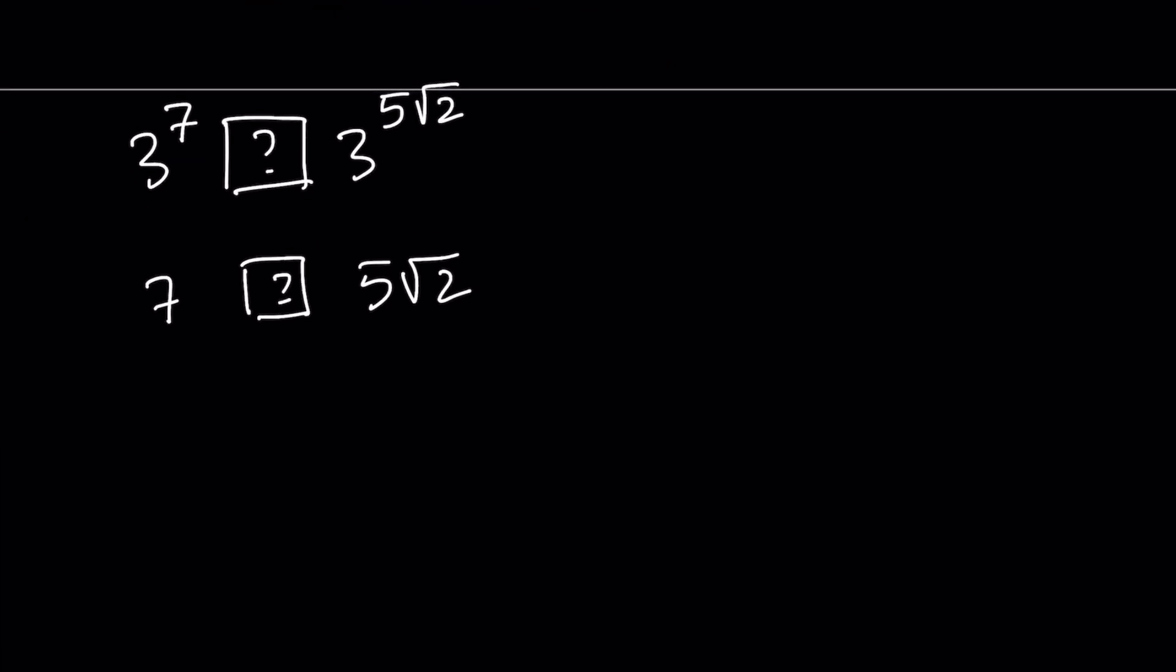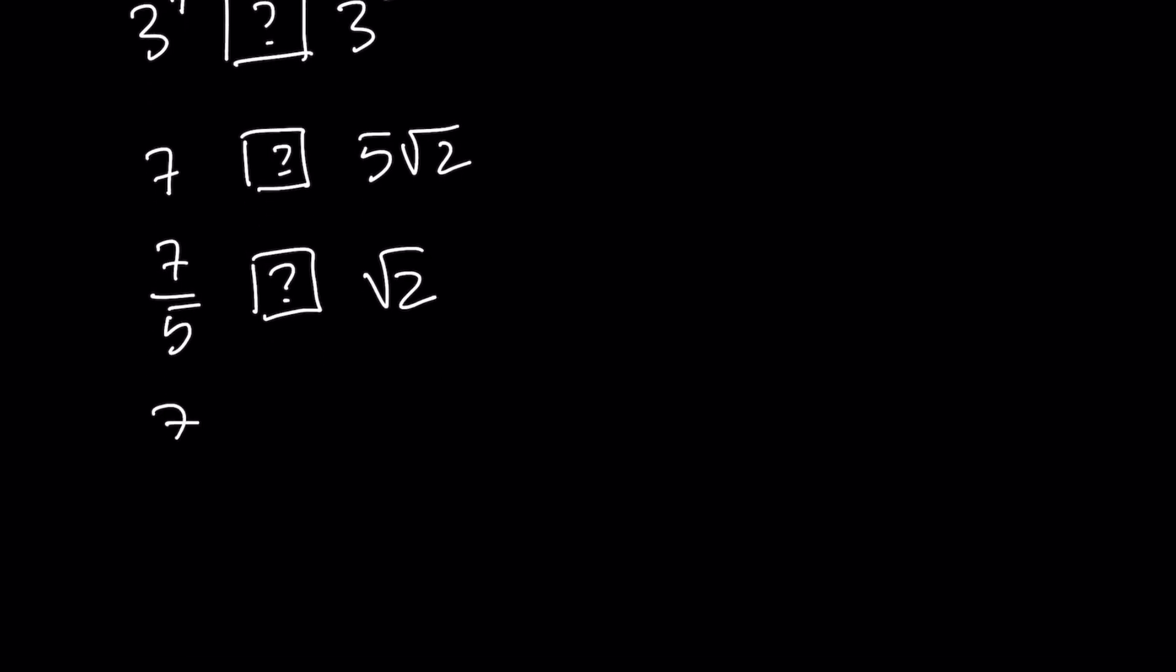How about we divide both sides by 5? That way, instead of comparing these two, why don't we compare 7 fifths and root 2? And I think that's an easy comparison. If you think about 7 over 5, that is equal to 1.4. And square root of 2 is 1.41421356237. Don't worry, I didn't memorize it. As you can see clearly,